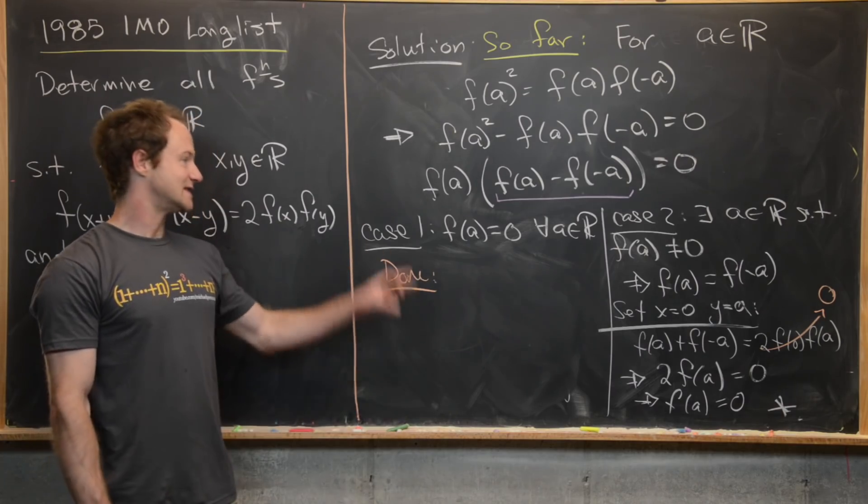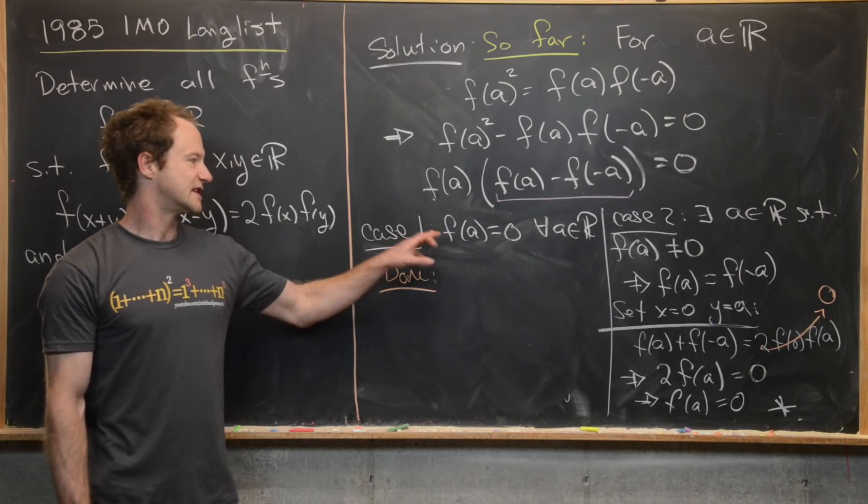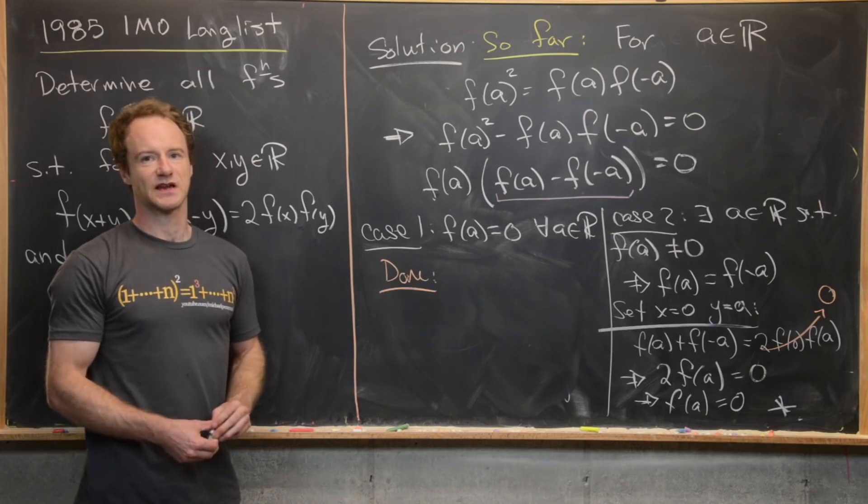So what that means is that case one is the only possibility. In other words, this function is equal to the constant function zero. And that's a good place to stop.